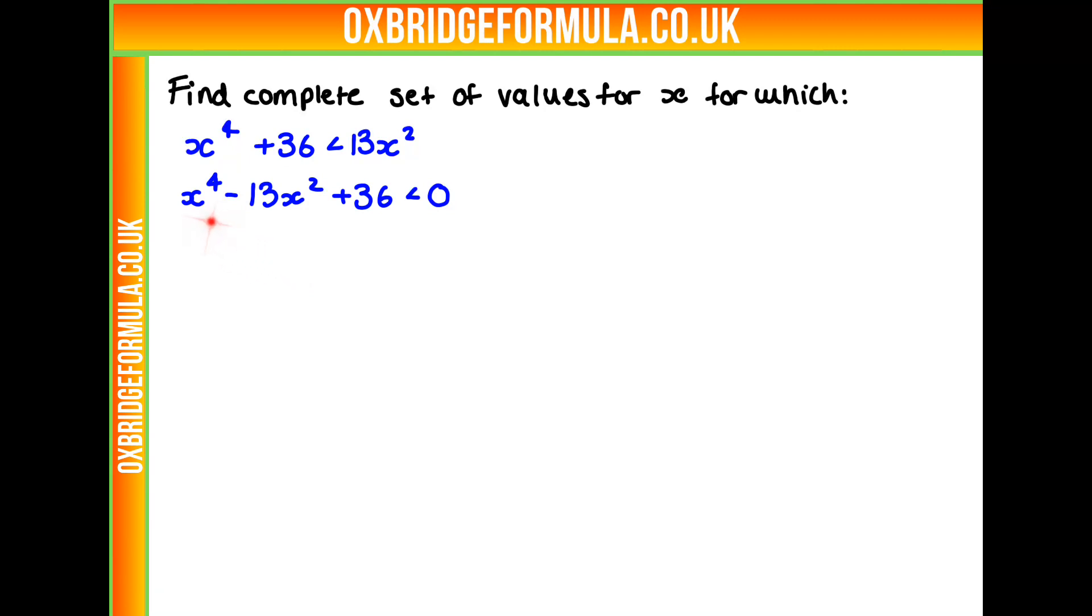Well, because we have no x to the power of 3 or just x terms by itself, this indicates to me that we're going to have a bracket with x squared minus or plus something times another bracket with x squared plus or minus something. So we can treat this just like a quadratic, basically.